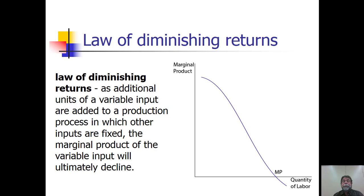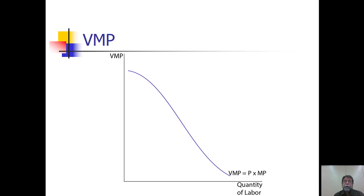Now let's graph this. The law of diminishing returns states that as additional units of a variable input are added to a production process in which other inputs are fixed, the marginal product of the variable input will ultimately decline. One economist noted that if this law did not hold, you could grow the entire world's food supply in a flower pot. In general, when capital is held constant, the output gains from additional labor become smaller and smaller. The value of the marginal product equals price times marginal product, and since price is positive and constant, the VMP curve looks very much like the marginal product curve.